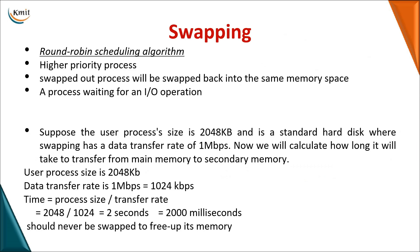There are two main reasons for swapping. First, in round robin scheduling, each process is given a time slice. Once that time slice is finished and there is no space in main memory, the process that has finished its time is moved out and a new process is brought in.